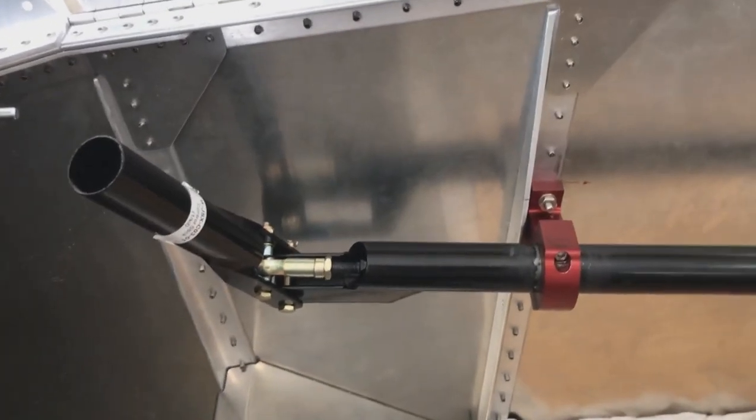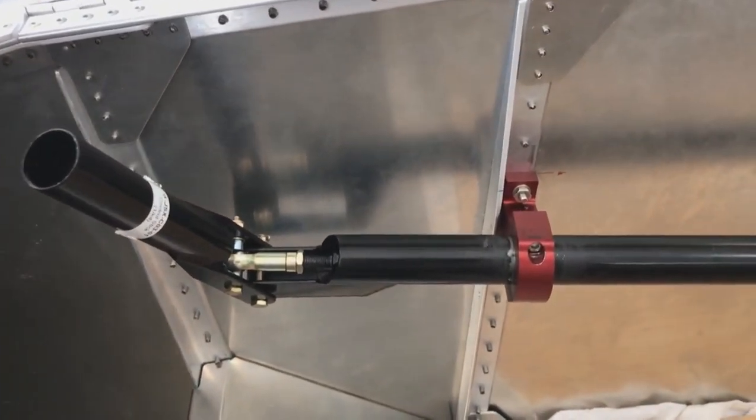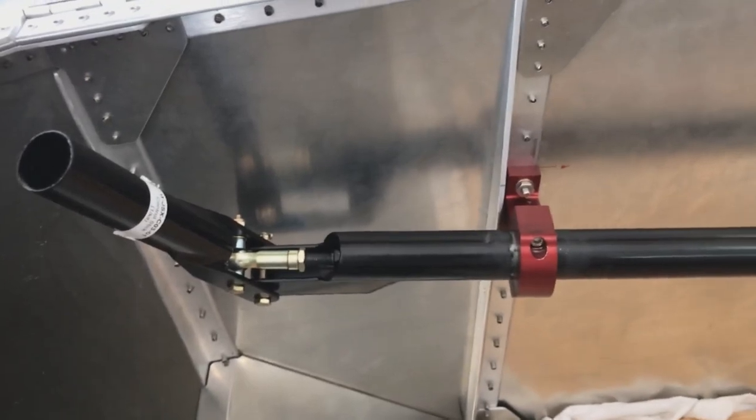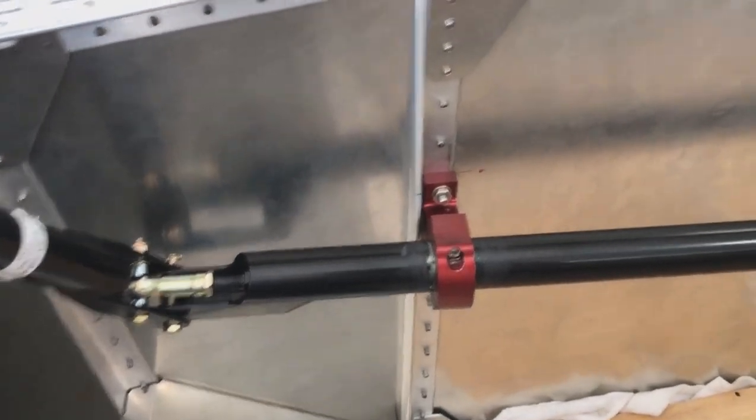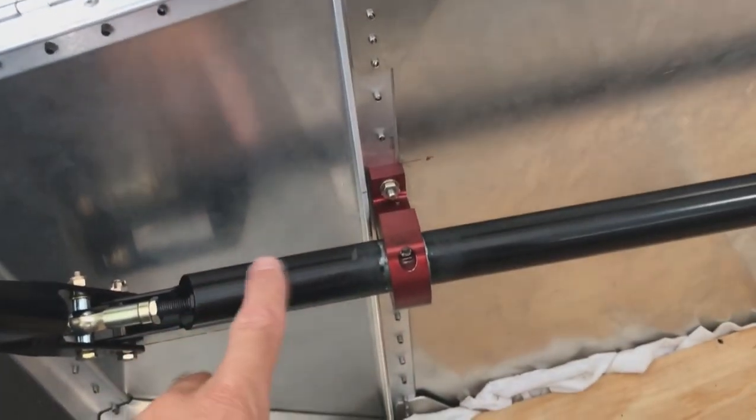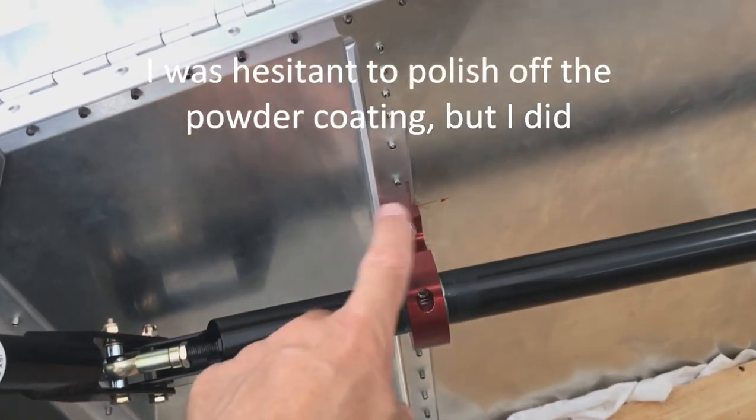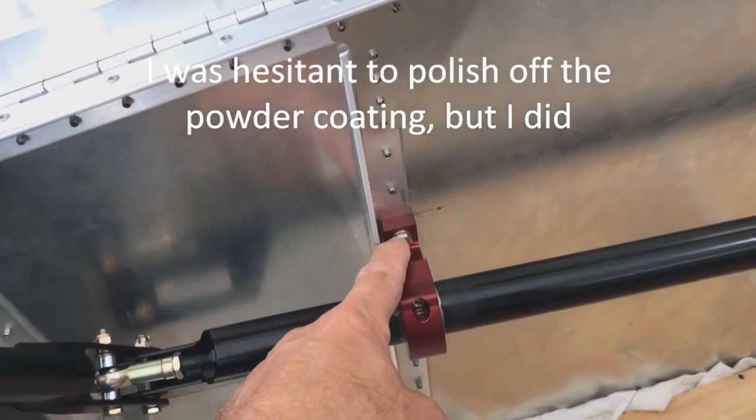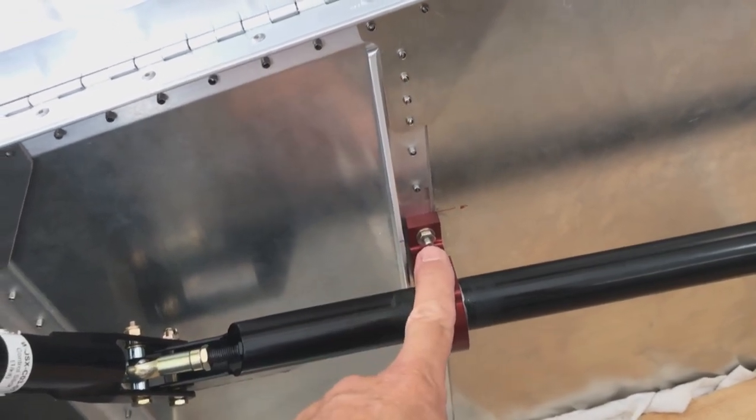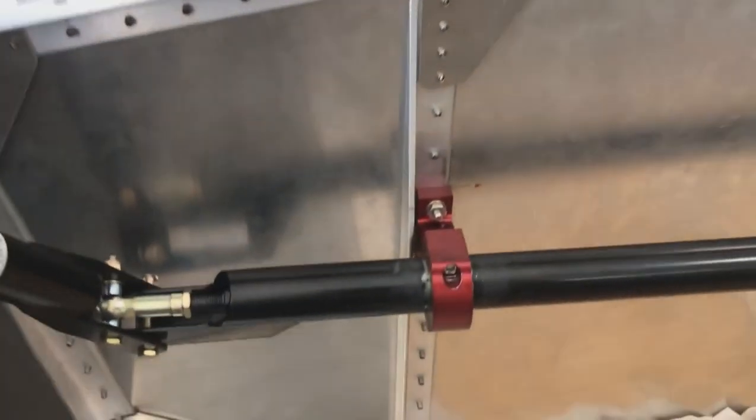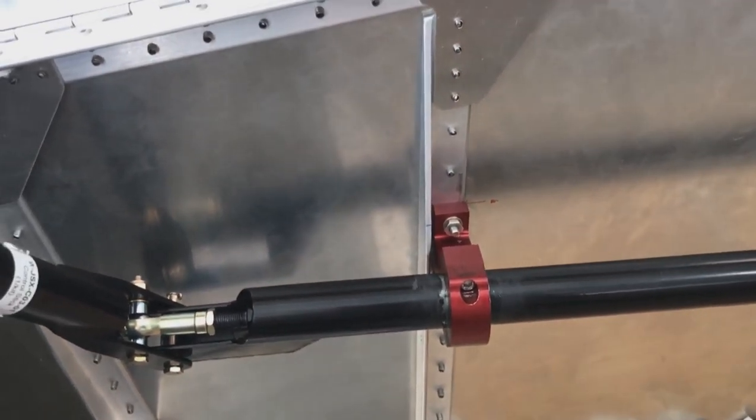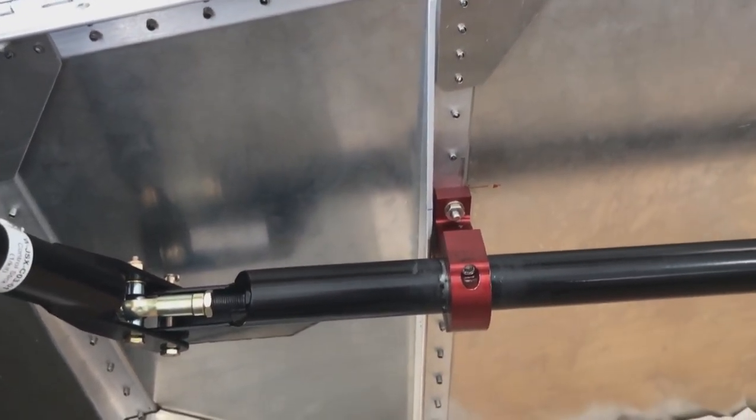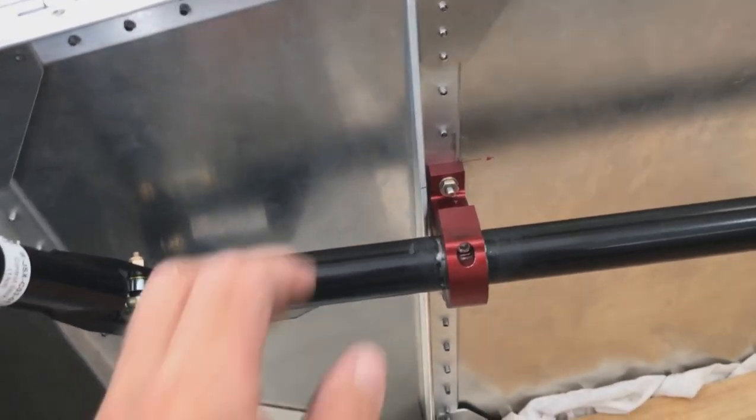The problem is twofold. It was binding in the mounts because they've got powder coating on here, and I think they misdrilled these holes through the fuselage for this particular mounting location. I think it's a little bit too low. After working on this thing for five days, the trick was polishing off the powder coat.